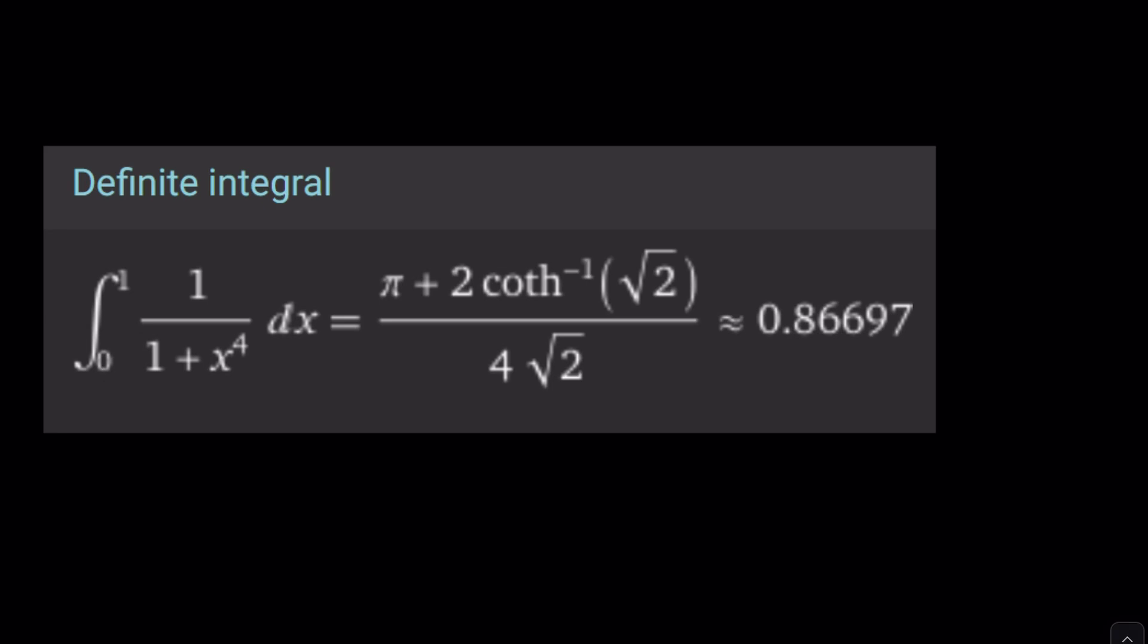So, the definite integral is equal to this, which is really weird. We have the inverse cotangent hyperbolic. Yes, because of the exponentials and all that stuff, that's what it is. But numerically, as you can see this sum actually converges, it's about 0.86697.